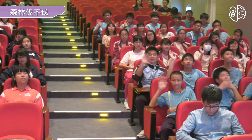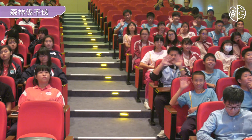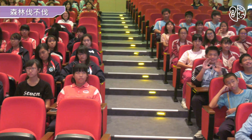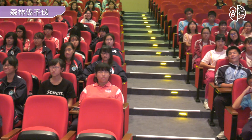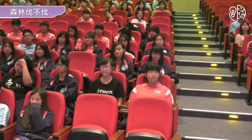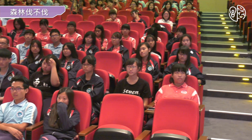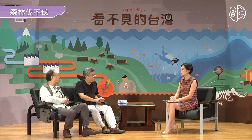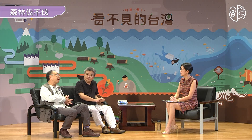过去林务局大概从97年到102年，做了所谓的第四次森林资源调查，把整个台湾森林资源的现况做了一个非常详细的盘查。其中有一项把它定位为叫做「生产性的人工林」。根据调查，台湾现在有将近26到27万公顷，平均每公顷约有220立方公尺的材积，全台湾26万多公顷现在大概有500多万立方公尺的木材。